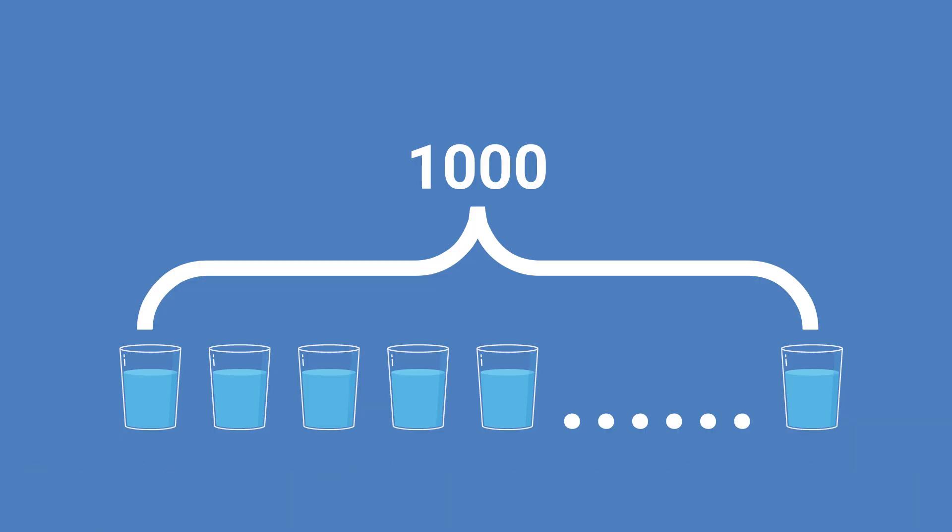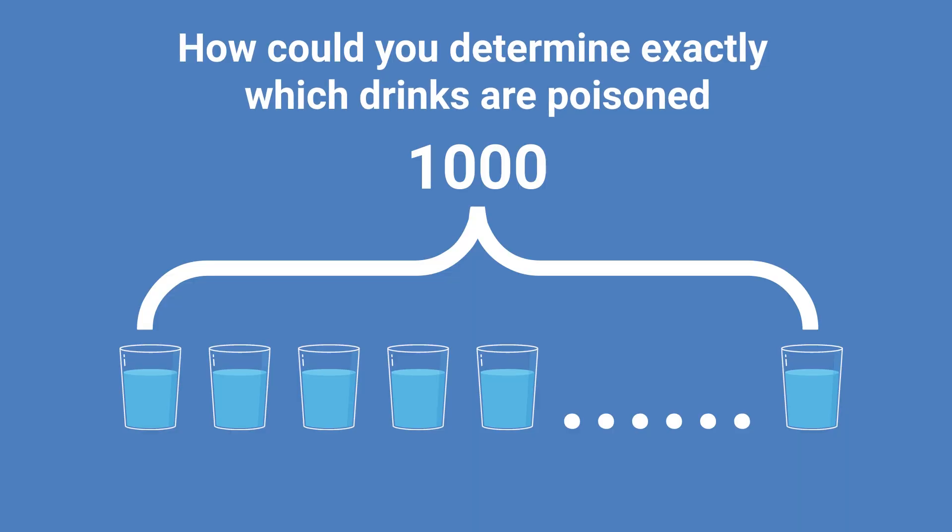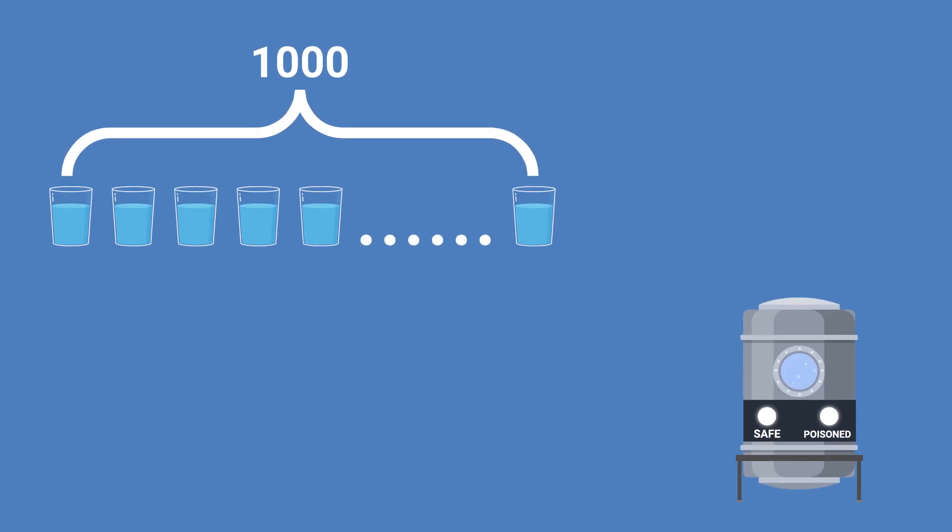Now the question is, in the most efficient way, how can you determine exactly which drinks are the poison ones? What you have available to you is a machine where you can input as much or as little liquid as you want, and if any of it has been poisoned, it will display poisoned. If not, it'll say safe.